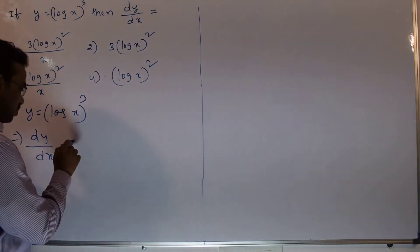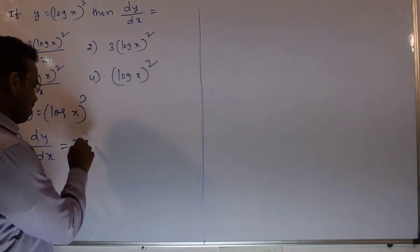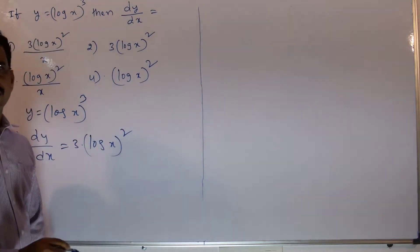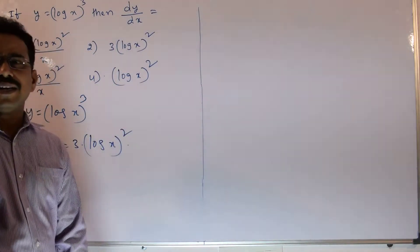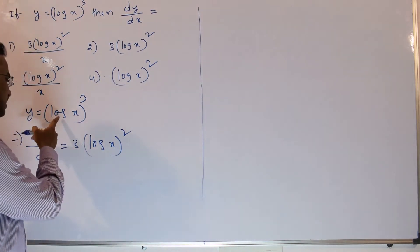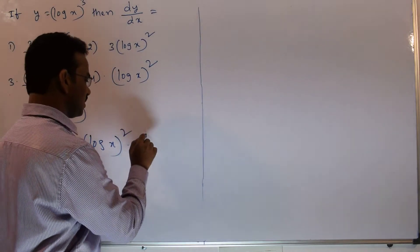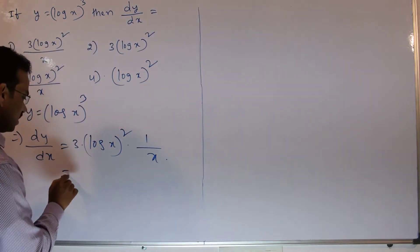Now you should write 3 into log x whole power 3 minus 1, which is whole square. And again you need to apply the chain rule. The chain rule means x is replaced by log x, so you have to take the derivative of log x. What is the derivative of log x? 1 by x.